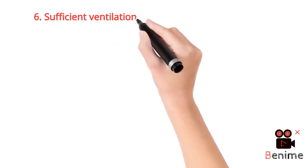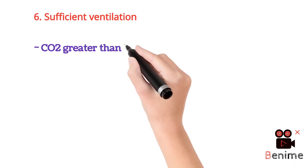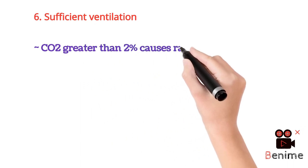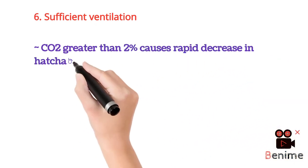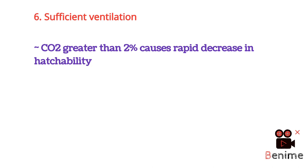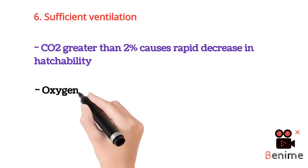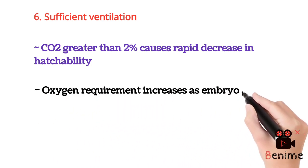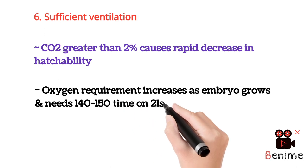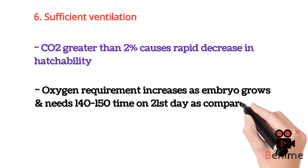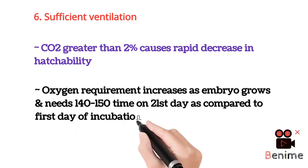The sixth factor is sufficient ventilation of the incubator. We have already discussed the normal levels of carbon dioxide and oxygen in our previous lecture. If carbon dioxide is greater than 2%, it causes a rapid decrease in hatchability, while oxygen requirements increase up to 140 to 150 times as compared to the first day of incubation to the 21st day of the incubation period.